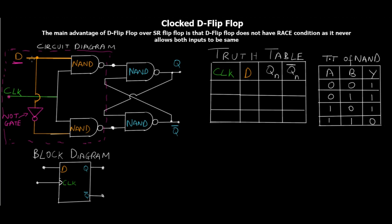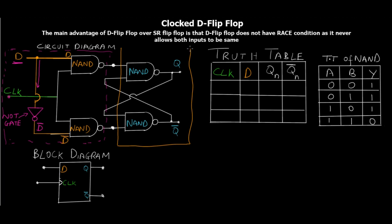We only have one D input. The upper NAND gate is supplied with D directly. However, for the lower NAND gate there is a NOT gate through which the D input passes, so the input to the lower NAND gate is D-bar — always the opposite of D. This is the only difference between the clocked D flip-flop and the clocked SR flip-flop. The SR latch portion — the two output NAND gates — is arranged exactly the same as in the SR flip-flop.